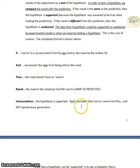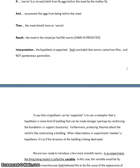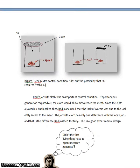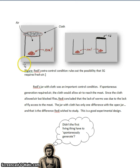So Redi is going to conclude from this experiment that the worms came from the flies and not spontaneous generation. But of course, as we've seen, the believers in spontaneous generation might have gone on to say that, well, fresh air is required, and that's why Redi had to include the jar with the cloth.